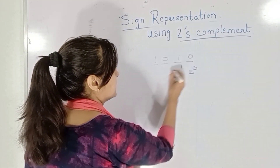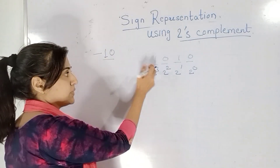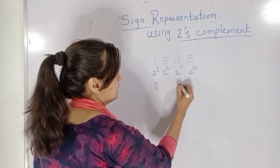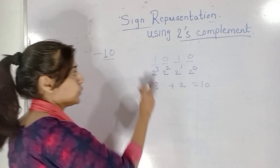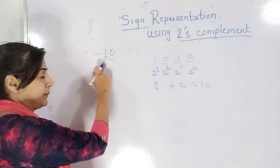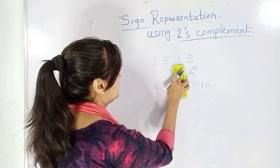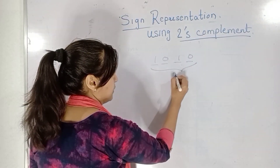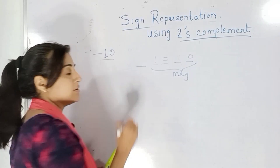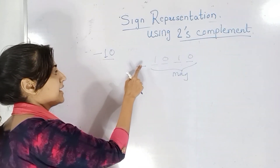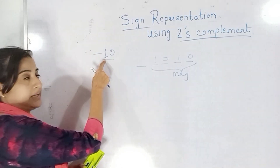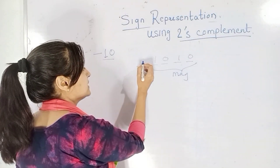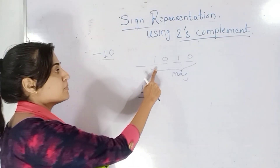We know 2 raised to 0, 2 raised to 1, 2 raised to 2, 2 raised to 3 — wherever there is a 1, we consider those bits only. So that is 8 and 2, and 8 plus 2 equals 10. So 1010 is the binary equivalent of 10. These are the magnitude bits. I need 1 more bit to represent the sign, so at least 5 bits are needed. The MSB is the sign bit, and since the number is minus 10, I write 1 for the sign bit.